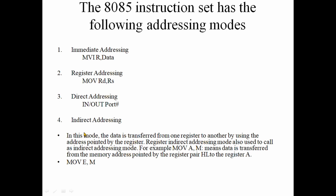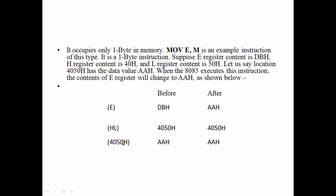This is Register Indirect Addressing. For this addressing mode, it is a 1-byte instruction because the address is held in a register pair, not in the instruction itself — so it is a 1-byte instruction.